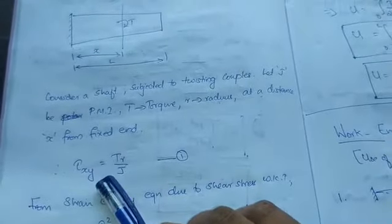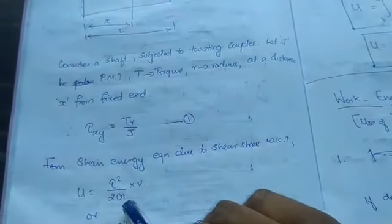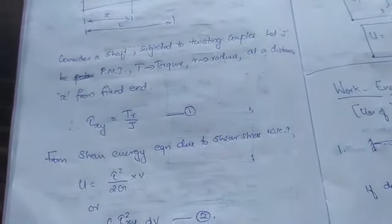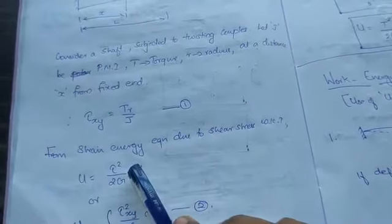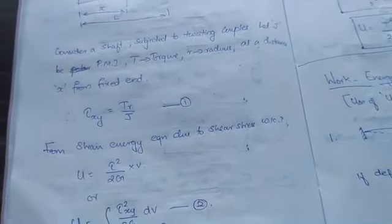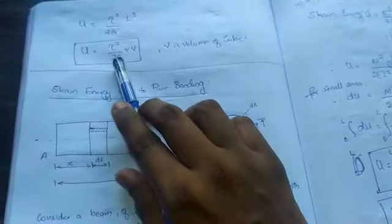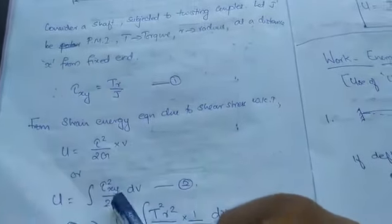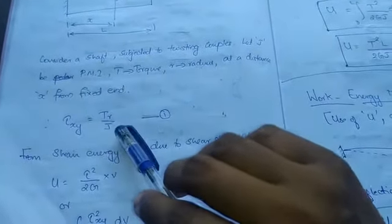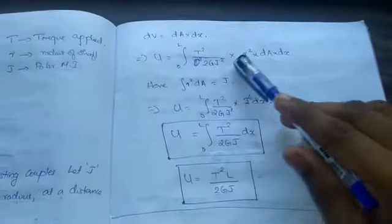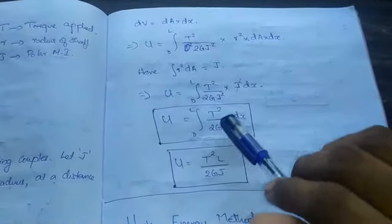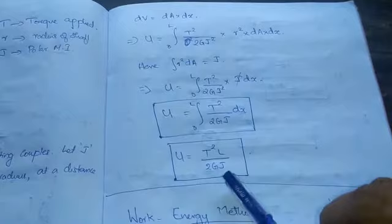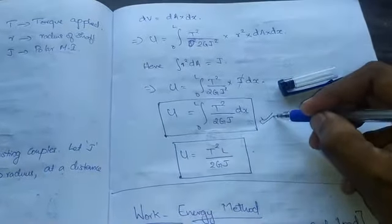Torsion is TR by J, strain energy equation is tau square by 2G into V. That equation is applied here and you integrate it. Instead of tau, you give this value. Then you will get, while solving this, U equals integral 0 to L T square by 2GJ dx or T square L by 2GJ. It's better to study this formula for problems.